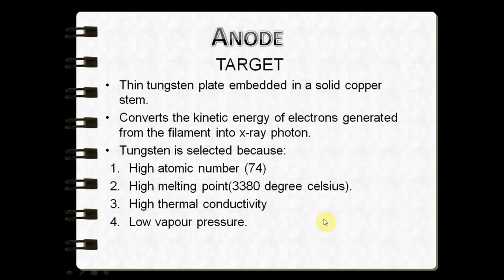The positively charged anode contains a thin tungsten plate embedded within a solid copper stem. Tungsten is the material of choice because it has a higher atomic number of 74, indicating a high charge on the nucleus, more photons, and higher binding energy of the orbital electrons. This gives rise to increased interaction between electrons and atoms, thereby increasing x-ray photon production.